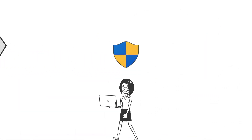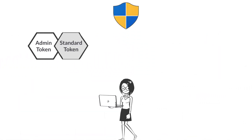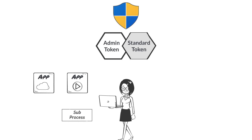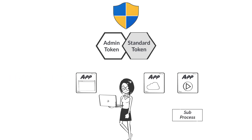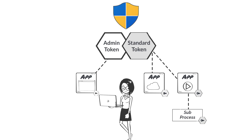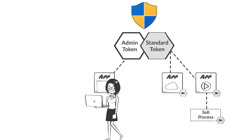UAC introduced the concept of a split access token for administrators, where processes and applications would by default receive a standard user access token, and those approved for elevation would receive an administrator token.